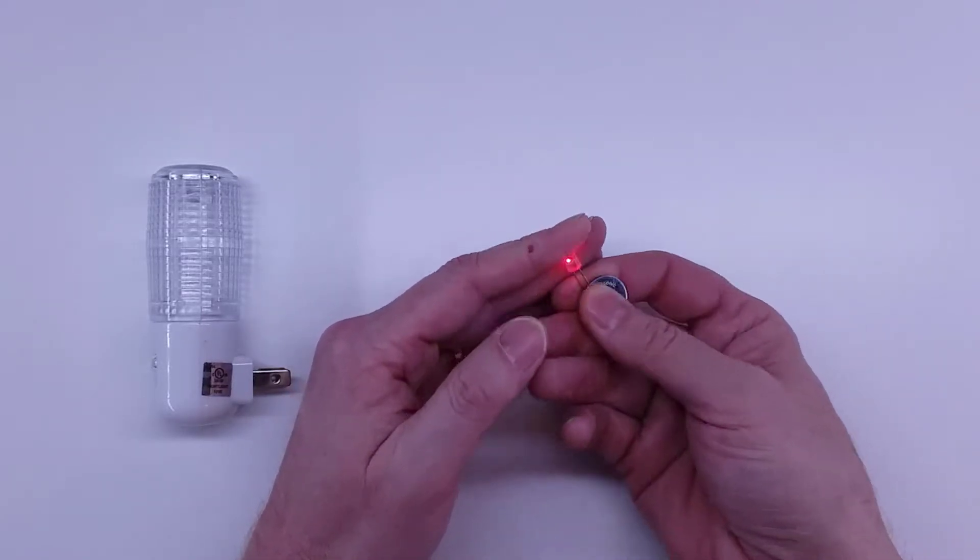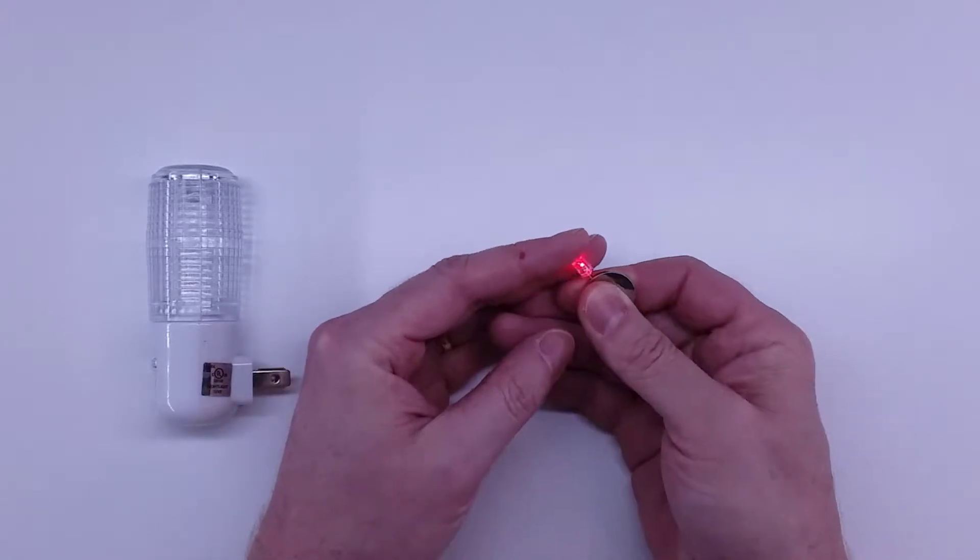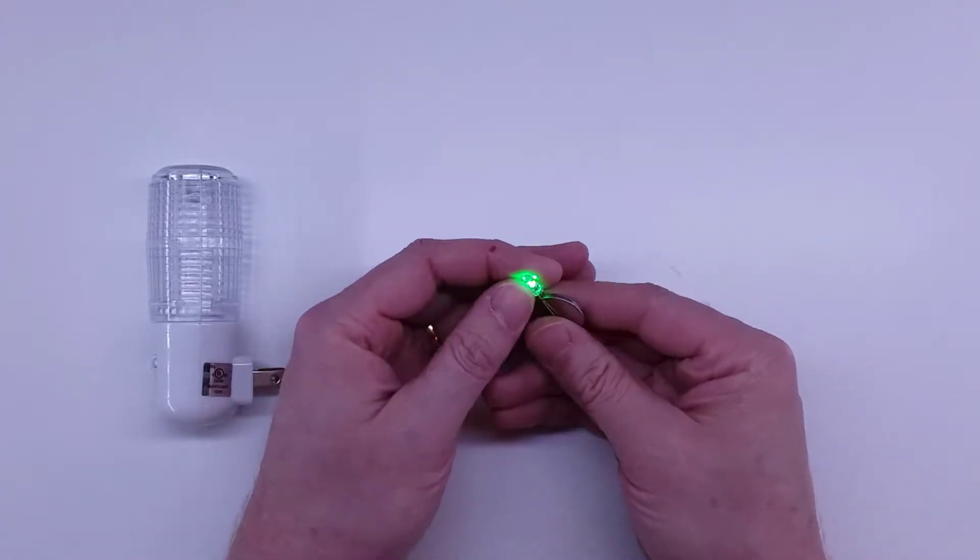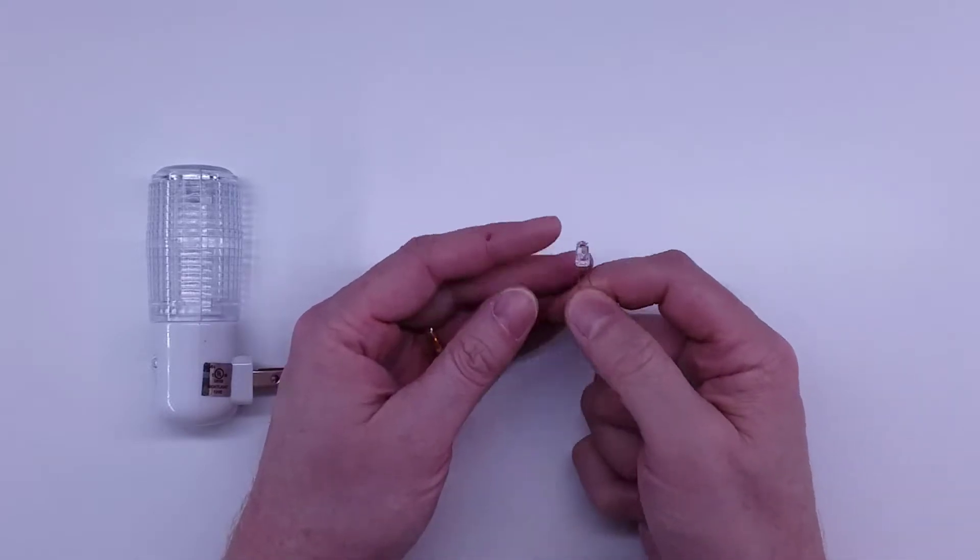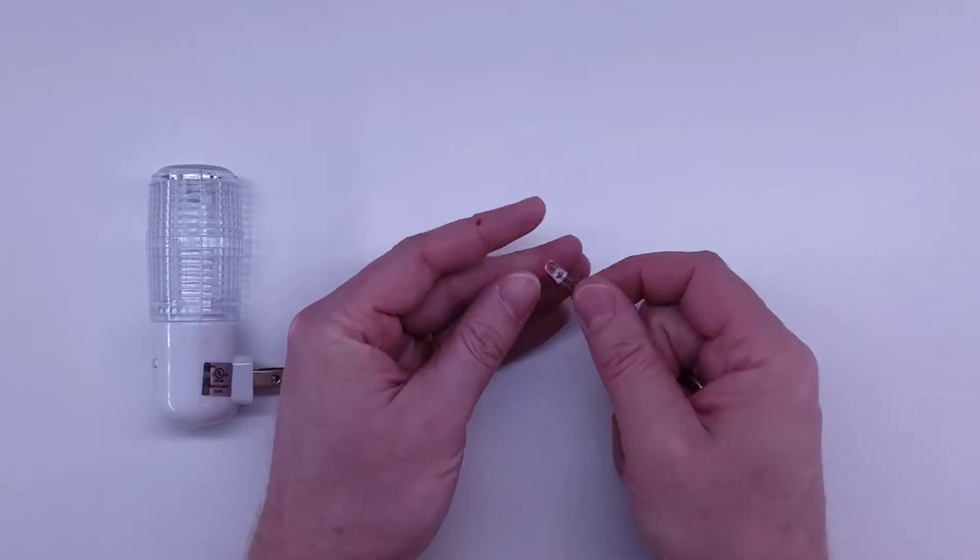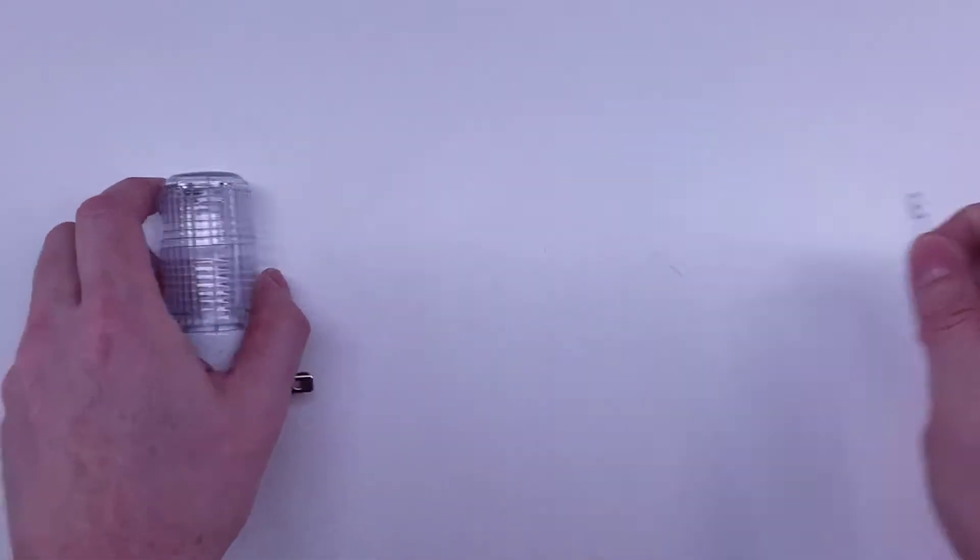They make a couple of different styles. This one's a slow flash or slow cycle, so it takes a little bit of time to go through. They also make a fast change one which cycles very quickly, and some flicker ones which you might see inside a little flameless tea light candle.